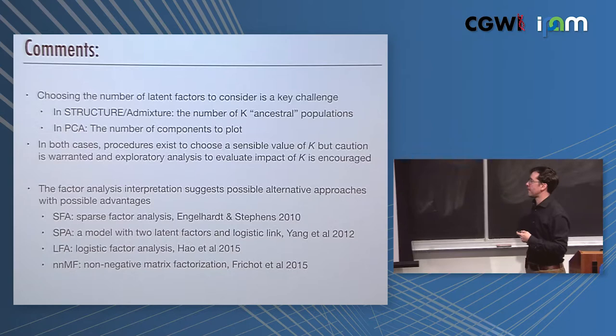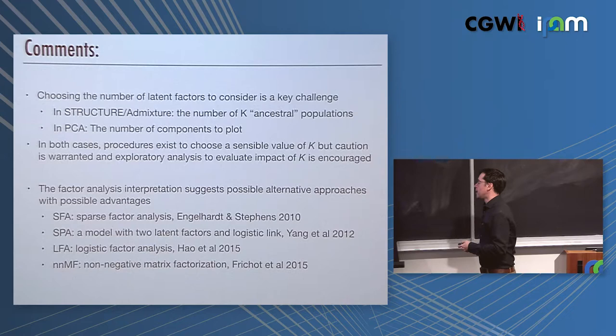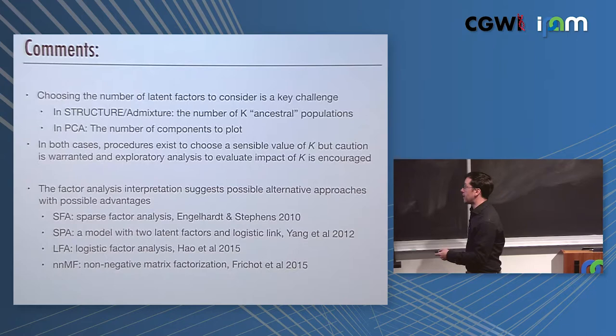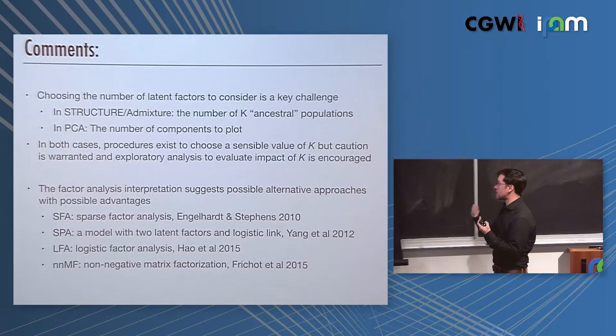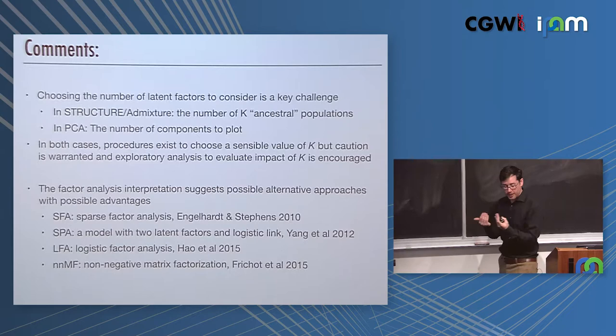Sparse factor analysis is an approach that Engelhardt and Stephens took where they impose priors that encourage sparseness in the solutions for the factors. In work that was done here with Hao and Eliezer, the SPA model is a kind of factor analysis with two latent factors and a logistic link. Hao developed this logistic factor analysis. Eric Frichot and colleagues have used non-negative matrix factorization to do another approach for viewing population structure.